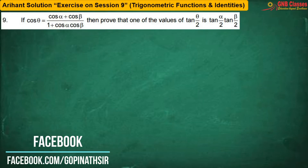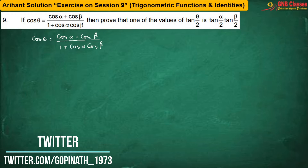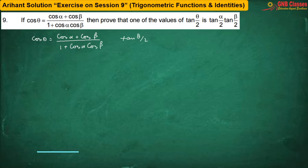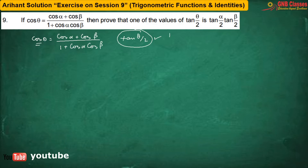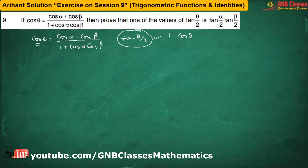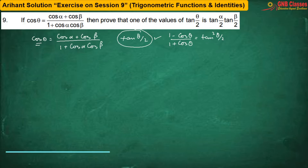Here we have been given that cosθ = ... We have to show that one value of tan(θ/2) is tan(α/2)·tan(β/2). Now to get tan(θ/2) from cosθ, we need (1 − cosθ)/(1 + cosθ), because (1 − cosθ)/(1 + cosθ) gives tan²(θ/2).